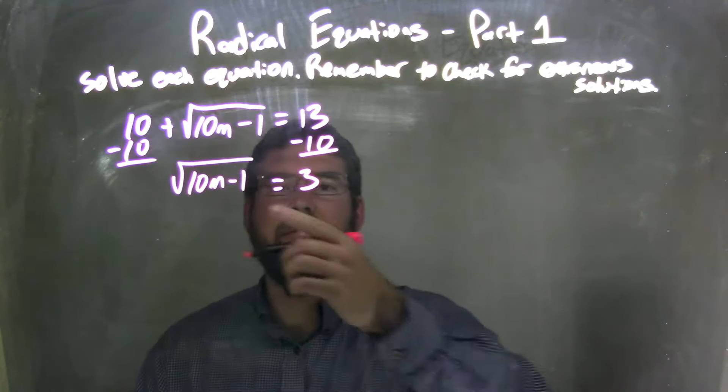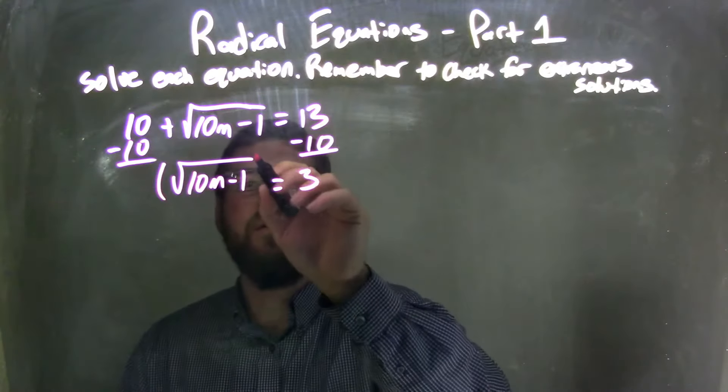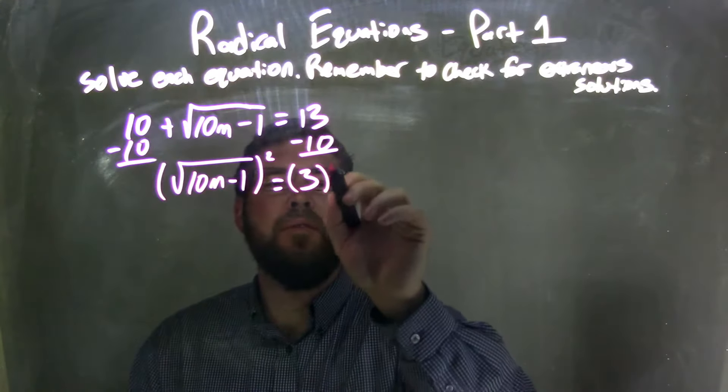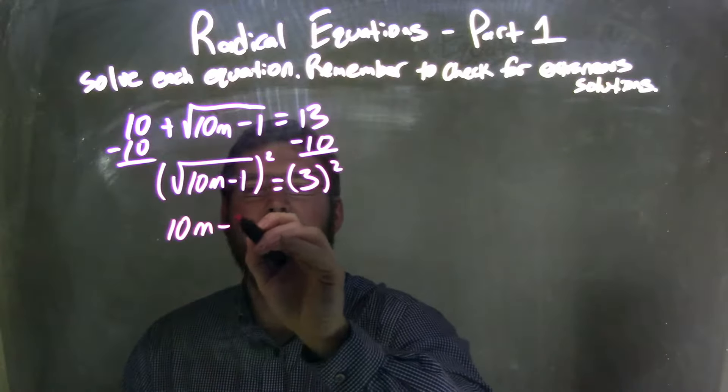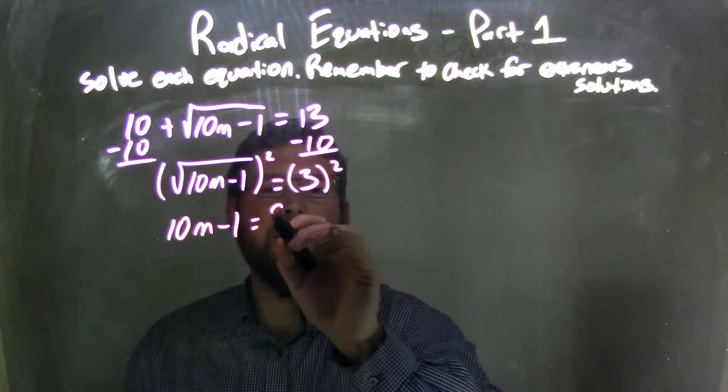From there, I need to get rid of the square root, so I'm going to square both sides, leaving me with 10m minus 1 equals 3 squared, which is 9.